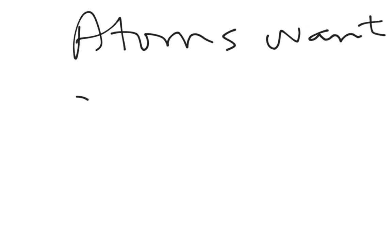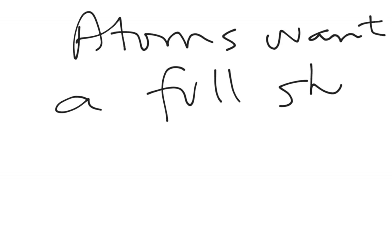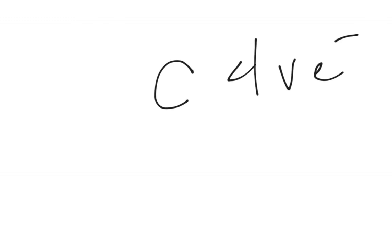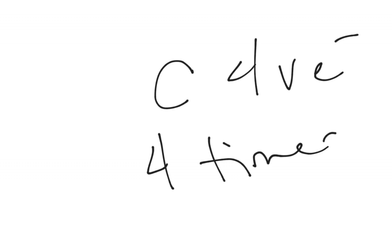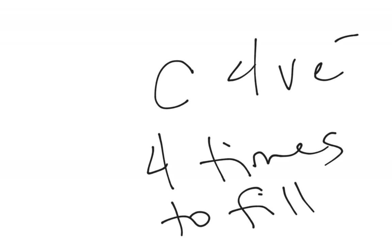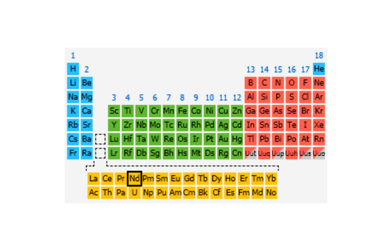Bonding comes because atoms want a full shell — the octet rule. They either want to get rid of electrons or they want to take electrons so that they have a full shell. Carbon has four valence electrons, so he's going to bond four times to fill his shell. It's really easy to see that when we look at the periodic table, because these guys already have a full shell, so they don't do anything.